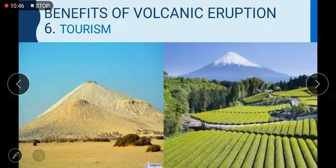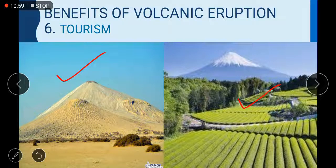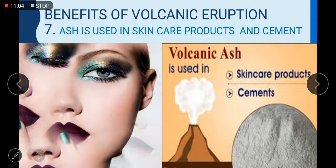Benefit number six: tourism. In the left picture you can see Chandragup mud volcano in Pakistan, which is a famous tourist area. You can also see a picture of Fiji and a volcanic mountain in Japan. Benefit number seven: ash is used in skincare products and cement. This is also a benefit of volcanic eruption — volcanic ash is used for skincare products and for making cement.